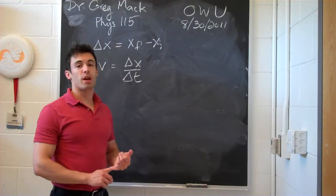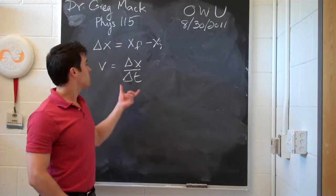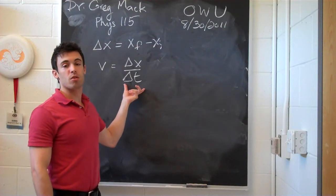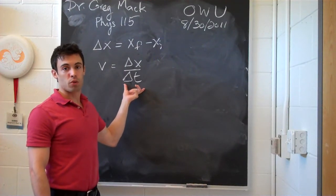If you're thinking about calculus relationships, this, when you take the limit as delta t goes to zero, is the derivative of x with respect to time.